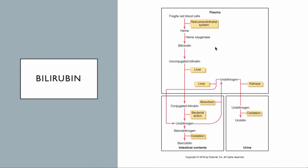The reticuloendothelial system — remember what that is? That's all the Kupffer cells and all the macrophages throughout the body. Kupffer cells are in the liver, and there are macrophages in the lungs and all tissues in the body, including the skin. Together we call them the reticuloendothelial system, which also includes the spleen and the liver. Those get the senescent red blood cells, the ones that are tagged to die, and extract the heme from them through this process with heme oxygenase. That produces biliverdin, and then that results in unconjugated bilirubin, which has to be combined with albumin or some other protein to make it soluble in the blood, and that's done in the liver.